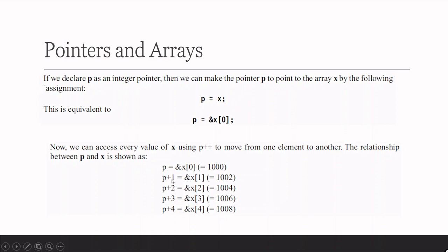Then p+1 corresponds to x[1] because it is pointing to the next integer in the array. And p+2, since it is an integer pointer, will move through 2 bytes. So p+2 will be 1004, p+3 will be 1006, and p+4 will be 1008.